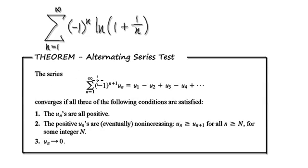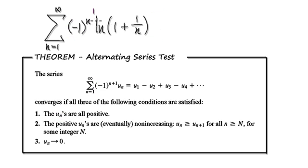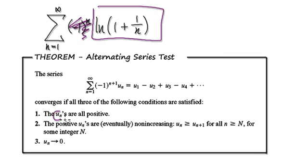So with the alternating series test, you discard the negative one to the n plus one part and just extract the u_n. So you discard that and just extract the u_n. Make sure all the u_n's are positive. So looking at this, let's just discard that and make sure that all the u_n's are positive.